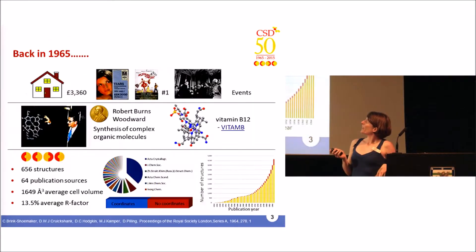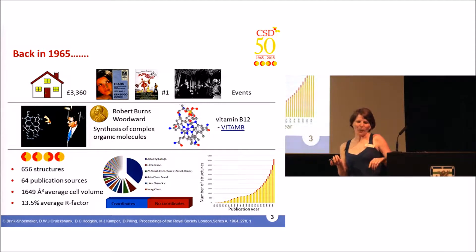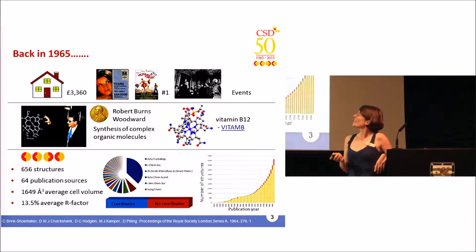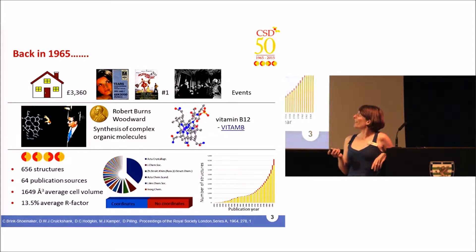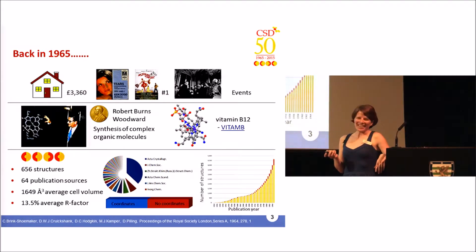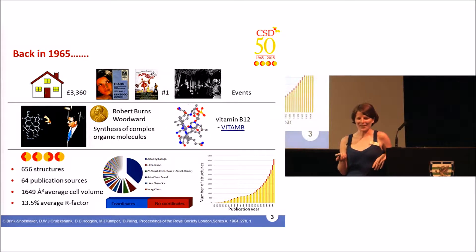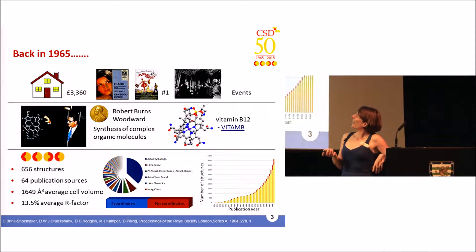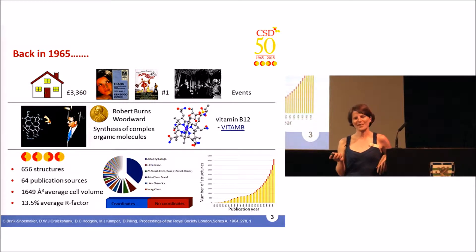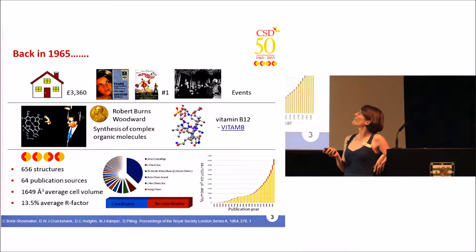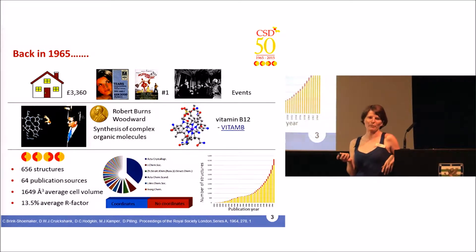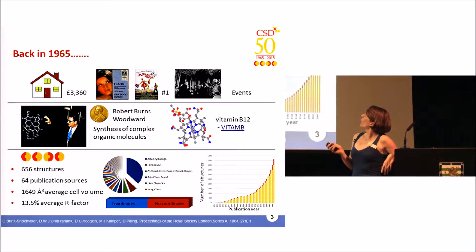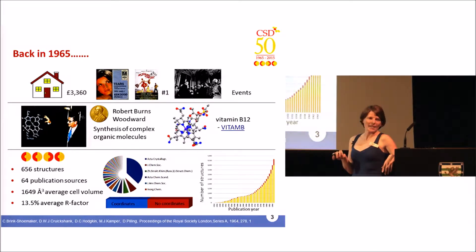Before we journey through the CSD, let's look back at what the world looked like in 1965. The average house price in the UK was just £3,360 — if house prices hadn't changed since then, I think we could all afford a house. The number one single in 1965 was 'Tears' by Ken Dodd, and everyone was flocking to the cinemas to watch The Sound of Music.